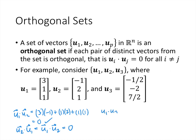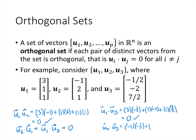We also have to check u1 dot u3. That's going to be 3 times negative 1 half plus 1 times negative 2 plus 1 times 7 halves, and that again works out to be 0. So now that we've checked all of the different pairs that we could take out of this set, we now know that this is an orthogonal set. Notice that the more vectors we have in the set, the more checking we have to do.